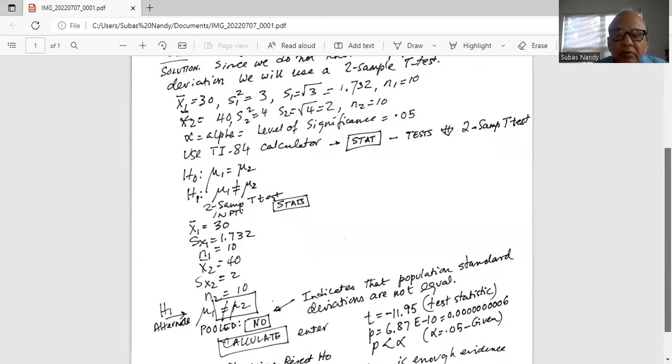Pooled is no. That means the population standard deviations are not equal. And then we bring the cursor to calculate and hit enter.